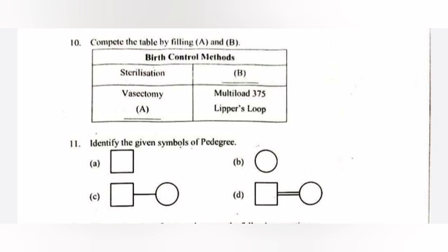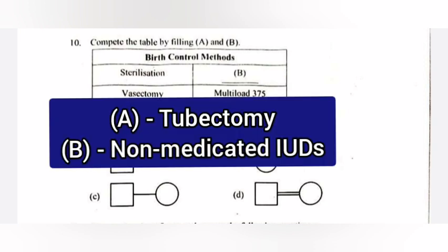Question 11: Complete the table by filling A and B. Answer: A — Tubectomy. B — Non-medicated IUDs.